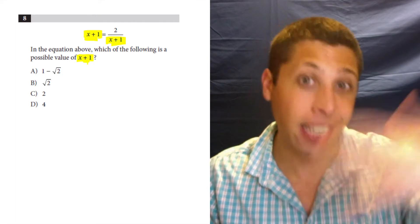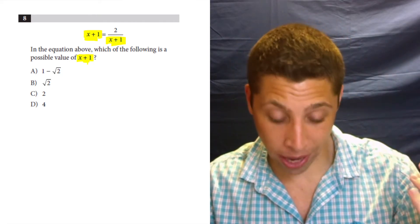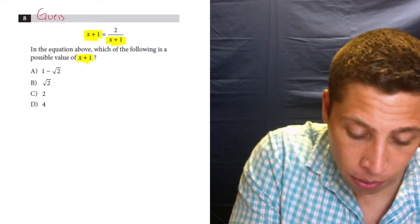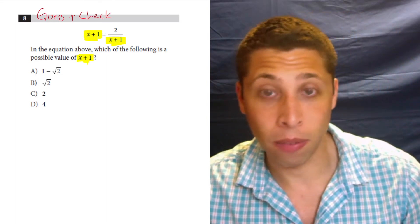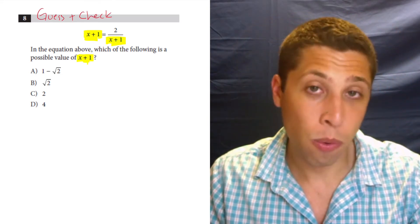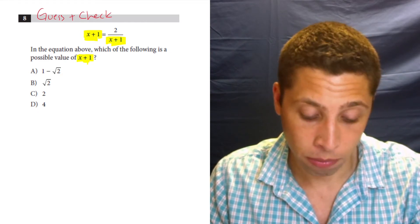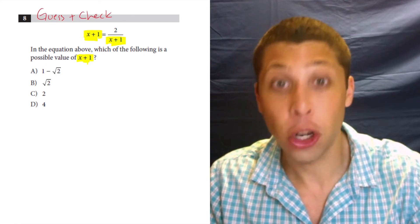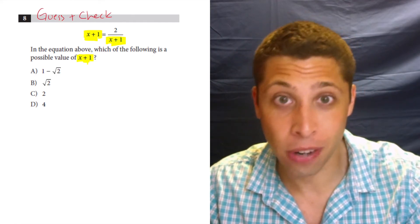And it can't be any number I can imagine. It can only be four different numbers: one minus radical two, radical two, two, and four. This is a great example where guess and check can make your life really easy, really fast. So what do we do? We just substitute these numbers in for the term X plus one. These are not X's, these are X plus ones.